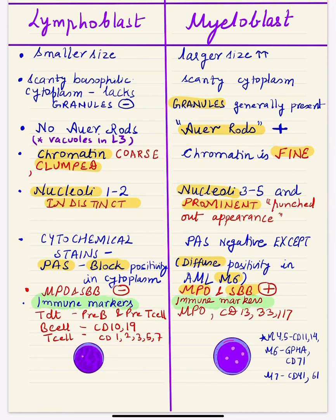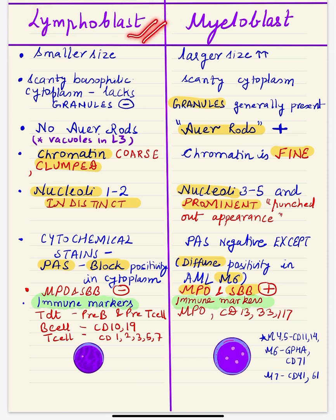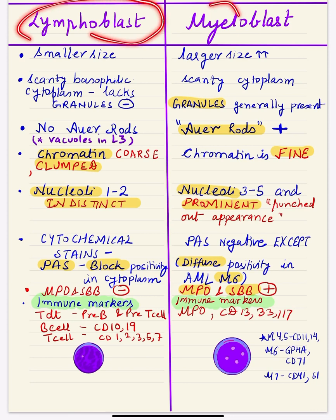Hello and welcome everyone. The topic today is the important comparison between the lymphoblast and the myeloblast. These are the precursor cells for the mature WBCs. The lymphoblast gives rise to lymphocytes and the myeloblast matures to give rise to granulocytes. Generally these immature WBC precursors proliferate uncontrollably in case of acute leukemia.